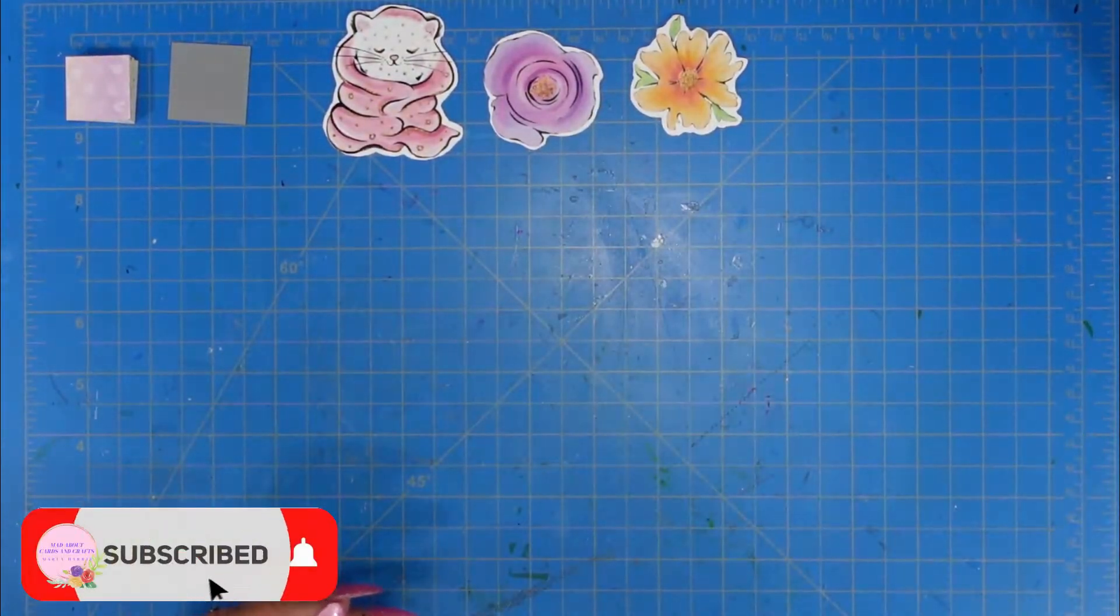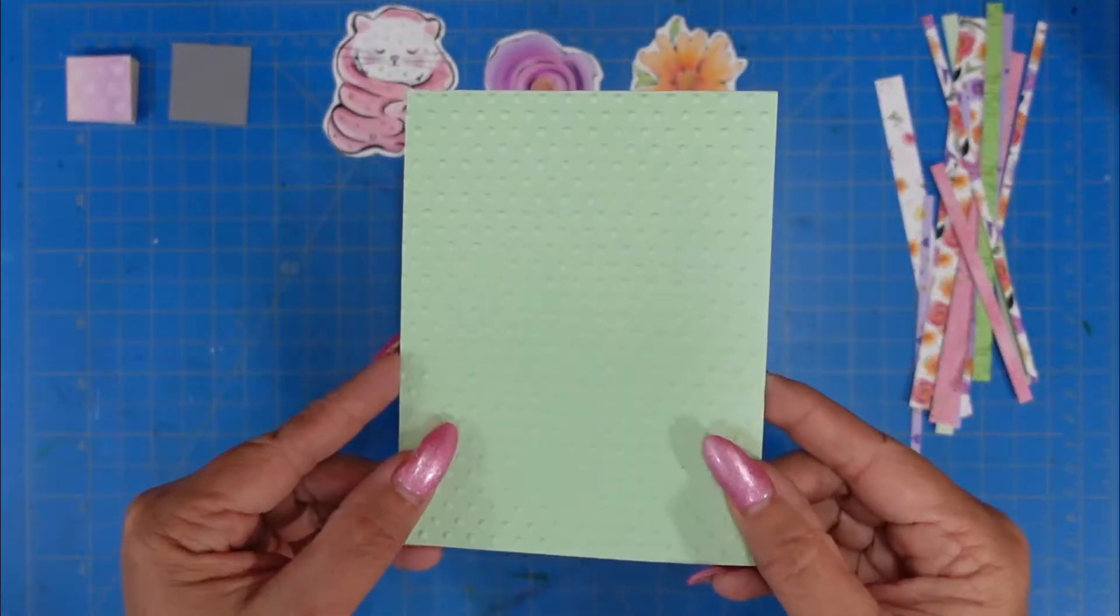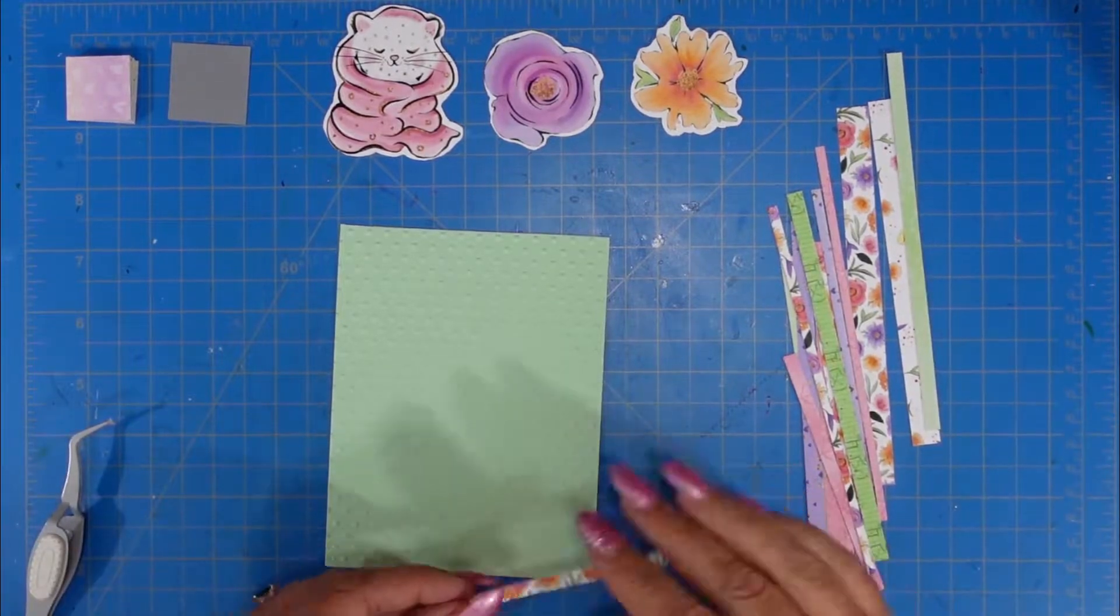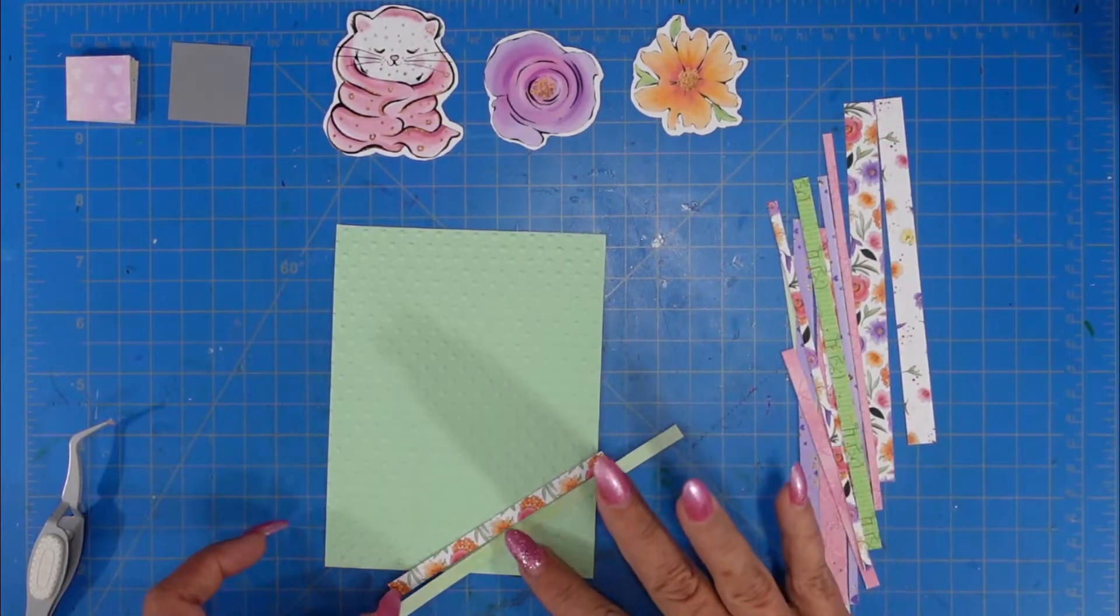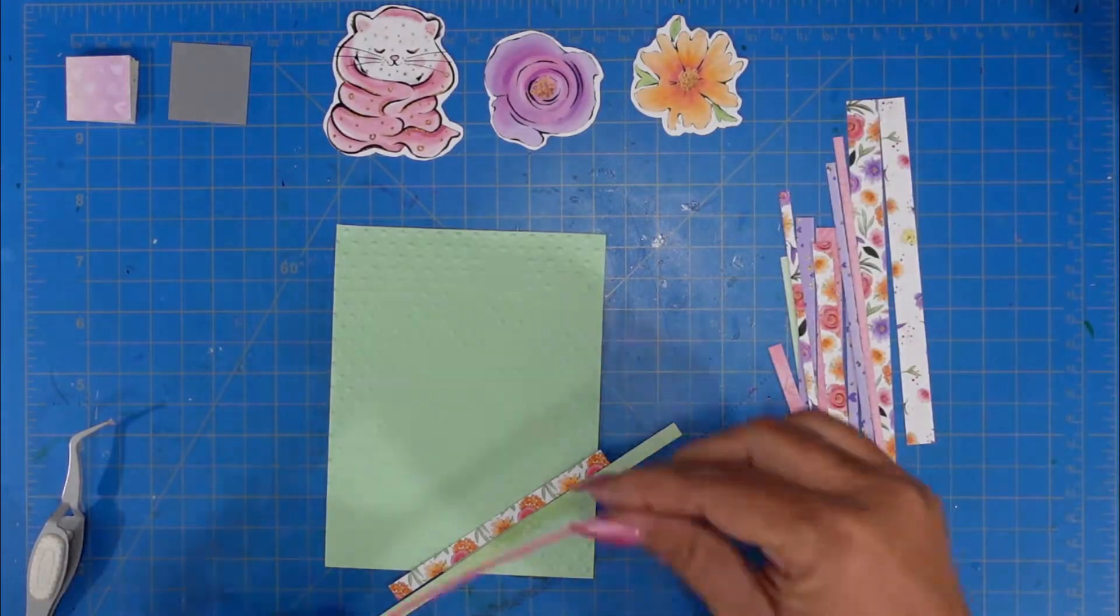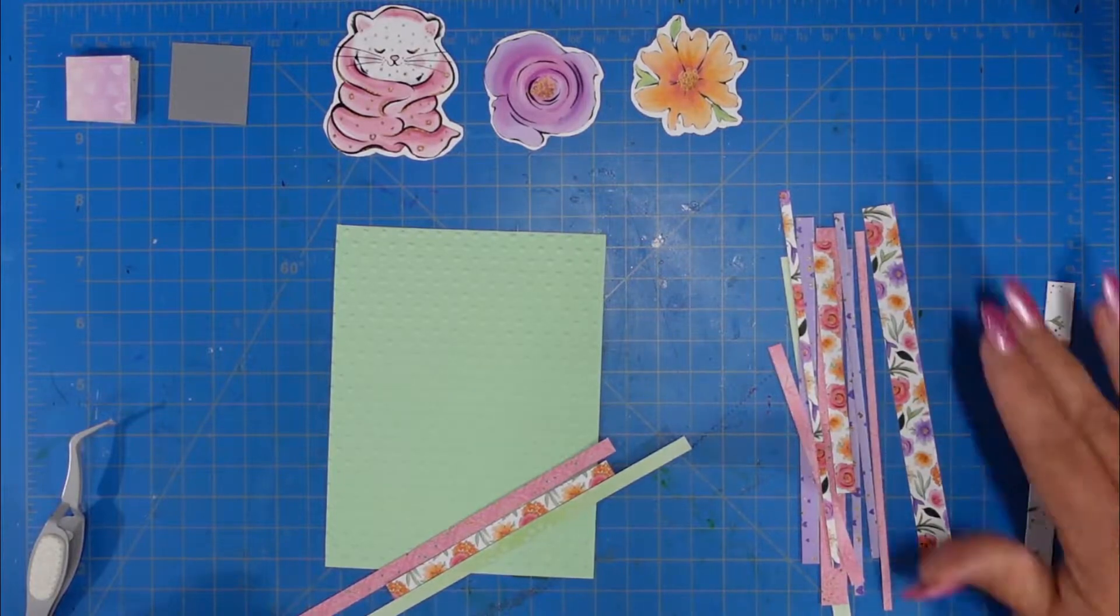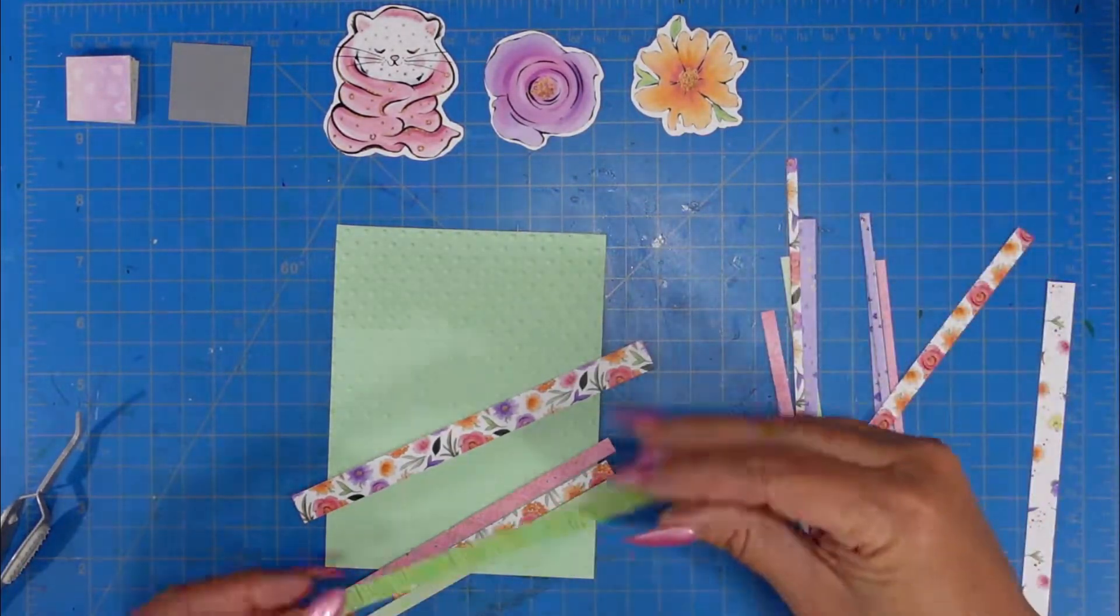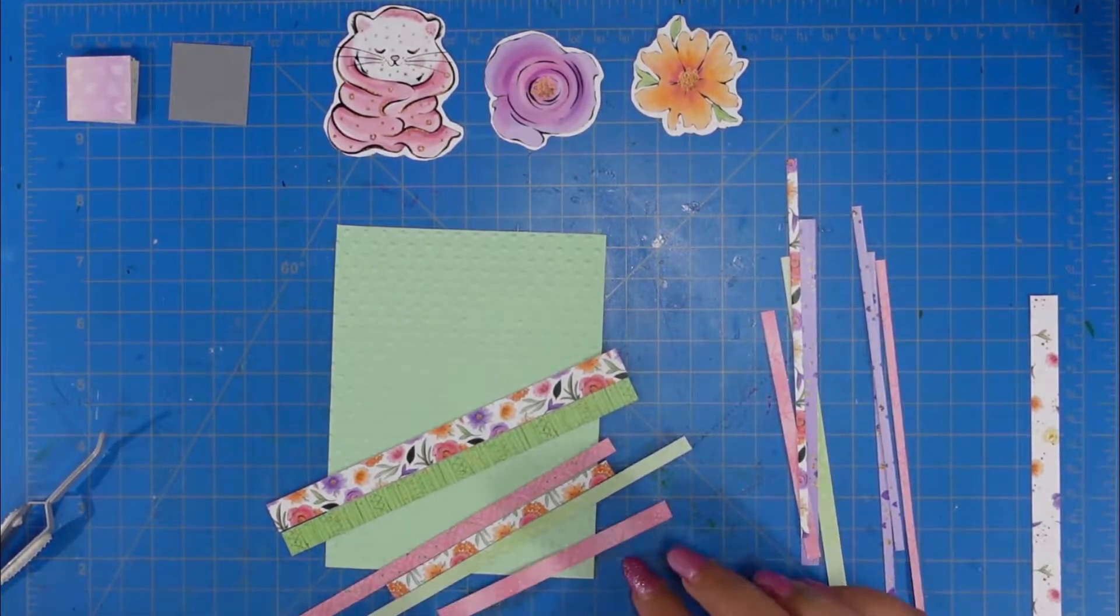My first card will feature three of the ephemera pieces and some scraps that I had. I did use the embossing folder on that mint paper so the paper has been cut down to four and a quarter by five and a half. I am going to lay out these strips. I am going to lay them a little bit low here, but I will come back when I go to glue them and I will adjust them a little further up on the card because I did want them to take up a little bit more real estate.